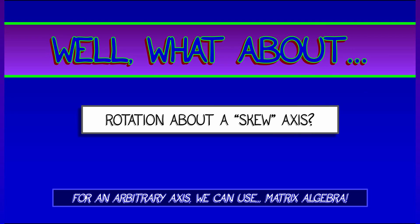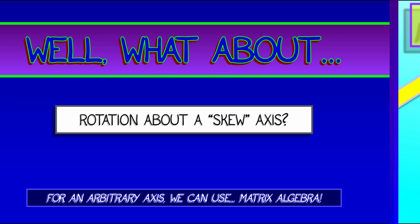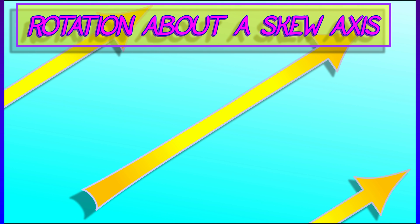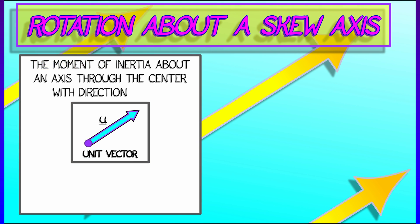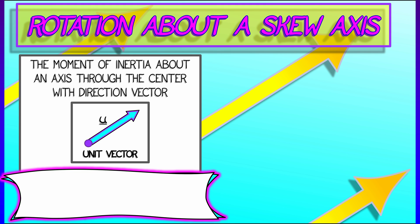But look, for an arbitrary axis, we can use matrix algebra to help us. Let's say that I've got the moment of inertia, and I know the inertia matrix about some center with respect to some frame. If I take a unit vector u and I want to know the moment of inertia i_u about that axis,